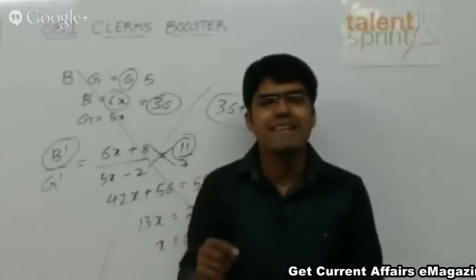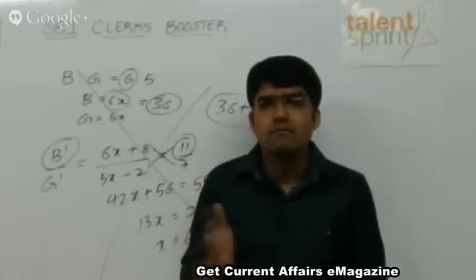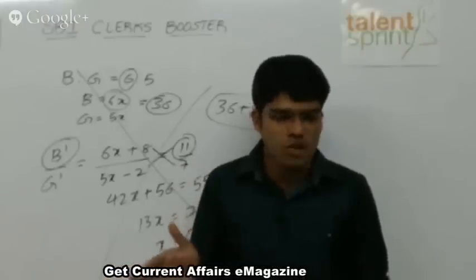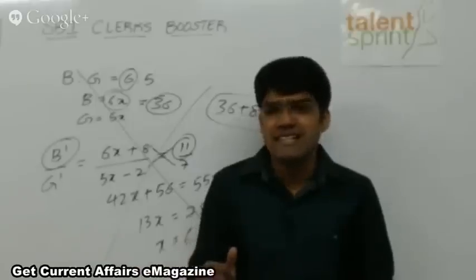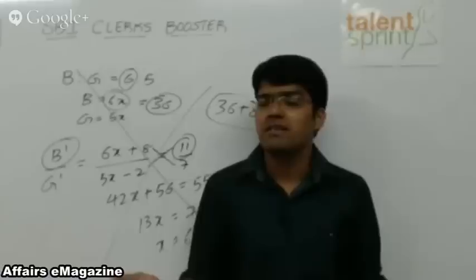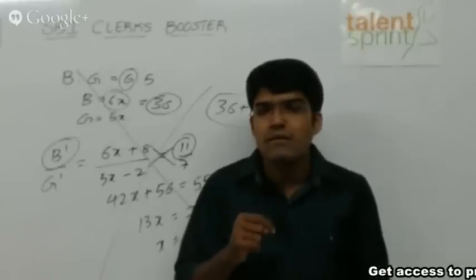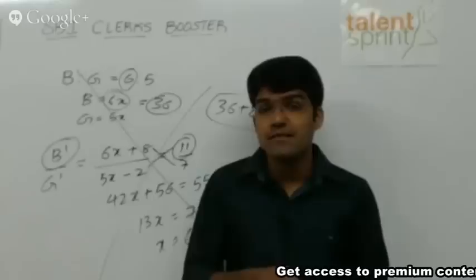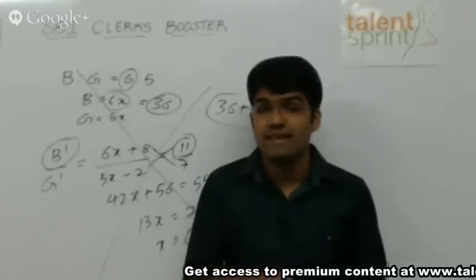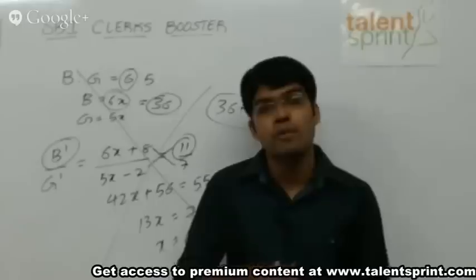Look at the options. First option 28. Is it a multiple of 11? No. Ruled out. Second option 38. Is it a multiple of 11? No. This cannot be the answer. Third option 44. Is 44 a multiple of 11? Yes. Satisfied, 44 is a multiple of 11. That means this may be the possible answer.